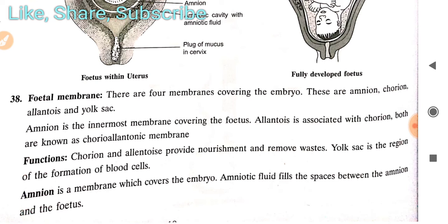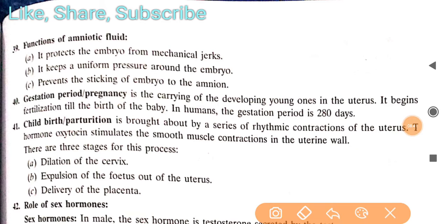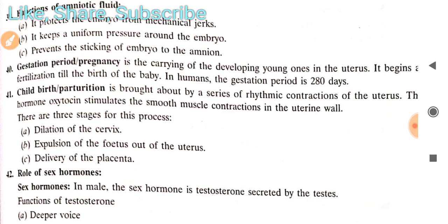The amnion is the membrane covering the embryo, and amniotic fluid fills the space between the amnion and the fetus. The first function of amniotic fluid is to protect the embryo from mechanical shocks — similar to how pericardial fluid protects the heart. It also keeps uniform pressure around the embryo and prevents the embryo from sticking to the amnion.